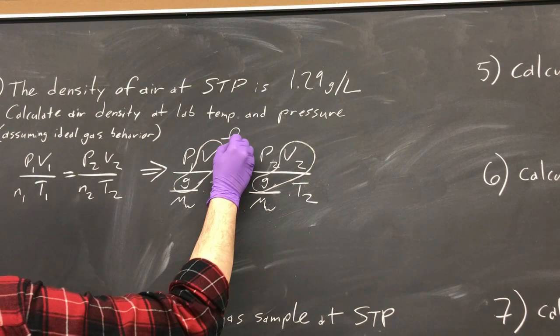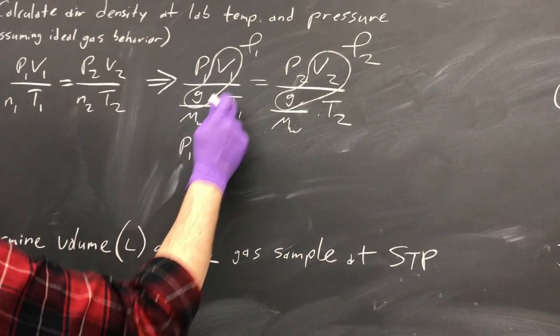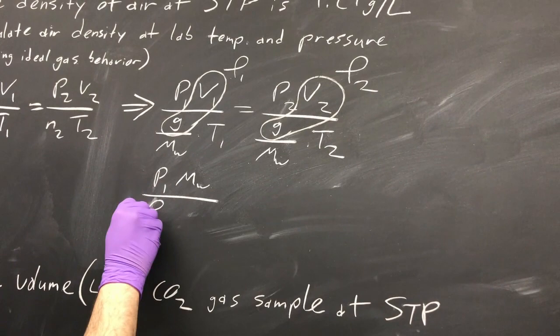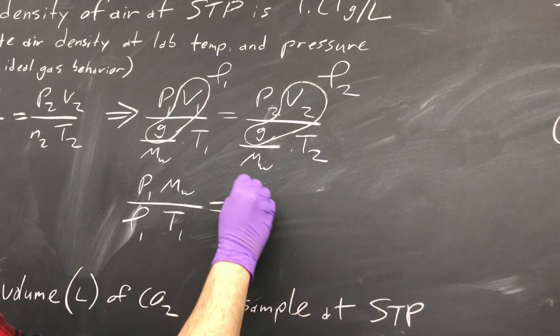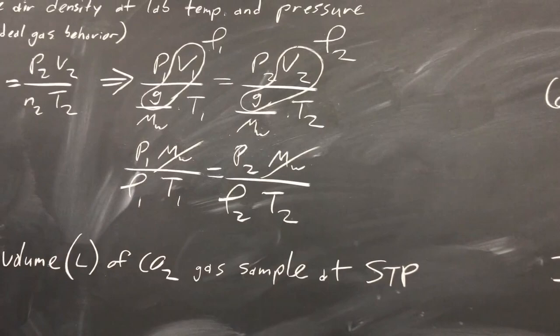And if you notice here, here, here, and here, is density. So if you kind of flip it, I have rho 1 and rho 2 for density. So that turns into P1 and then molecular weight actually comes up here over rho 1 T1 equals pressure 2 molecular weight over rho 2 T2.